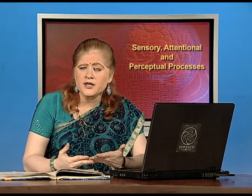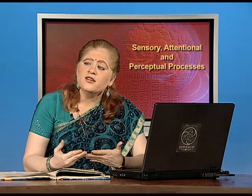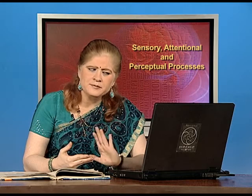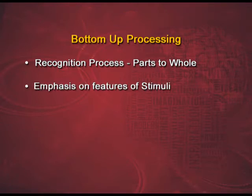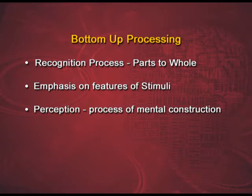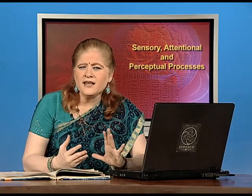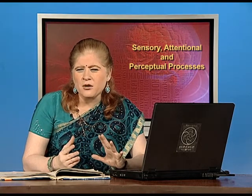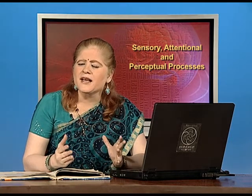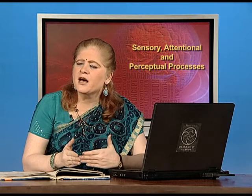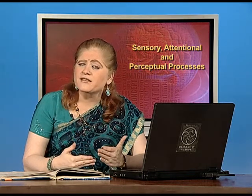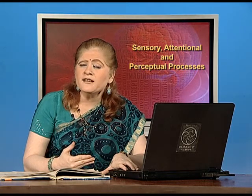So how does this process work? It involves a number of sub-processes called processing approaches. The first one is called the bottom-up approach. This is the process in which you recognize the parts and then perceive the whole. The emphasis is on the features of the stimuli. For example, you see clouds, a mountain, and a river flowing, and therefore determine that this painting gives the feel of a hill station scenery. The parts are perceived first and then built up into a whole.